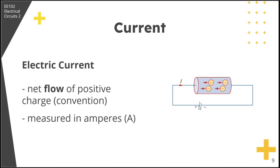In actuality, current is the flow of negatively charged electrons. However, we will follow the IEEE convention that current is the net flow of positive charges. A convention is a standard way of describing something so that others in the same profession can understand what we mean.